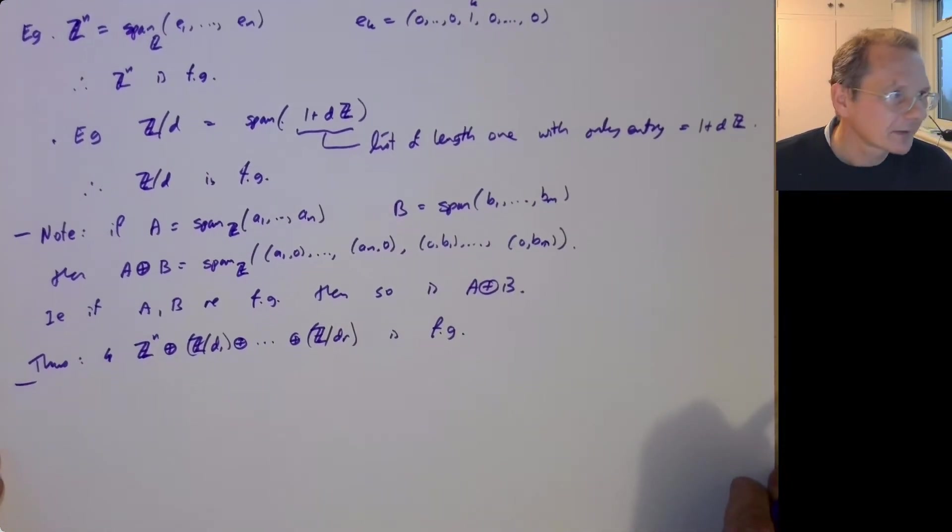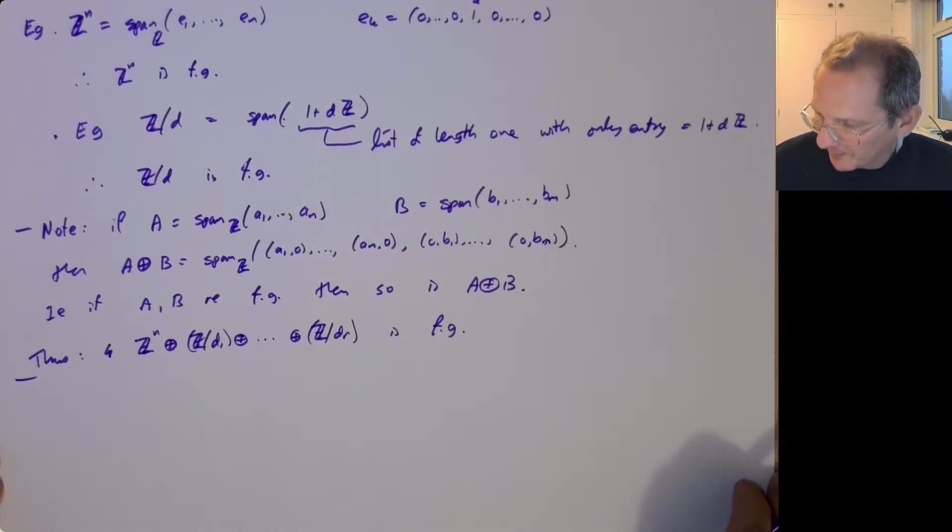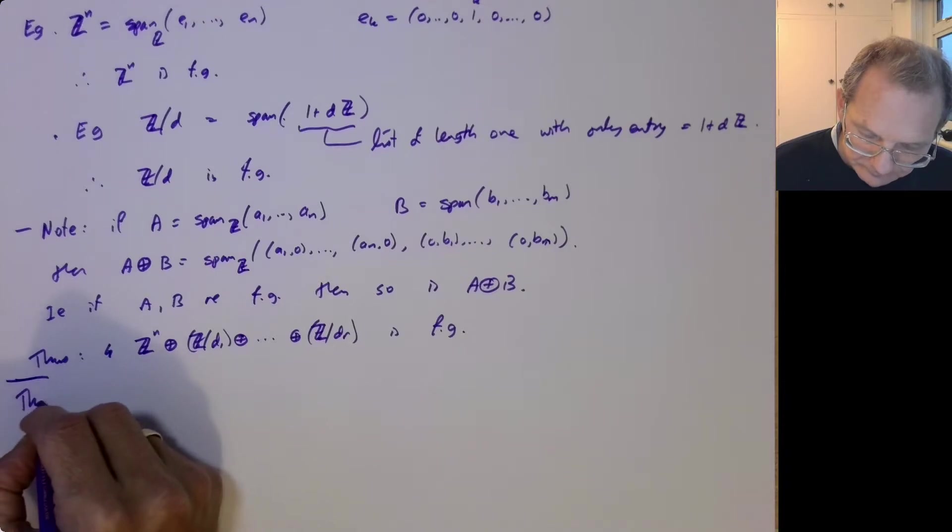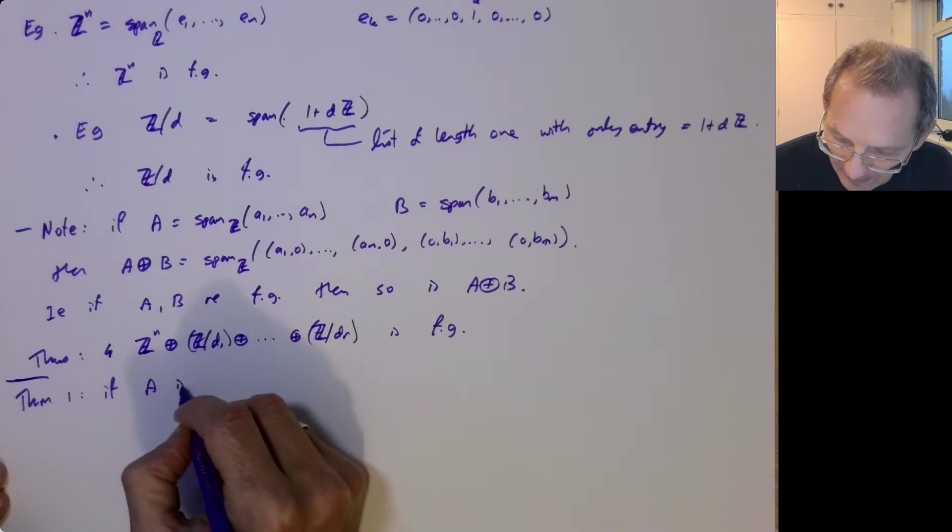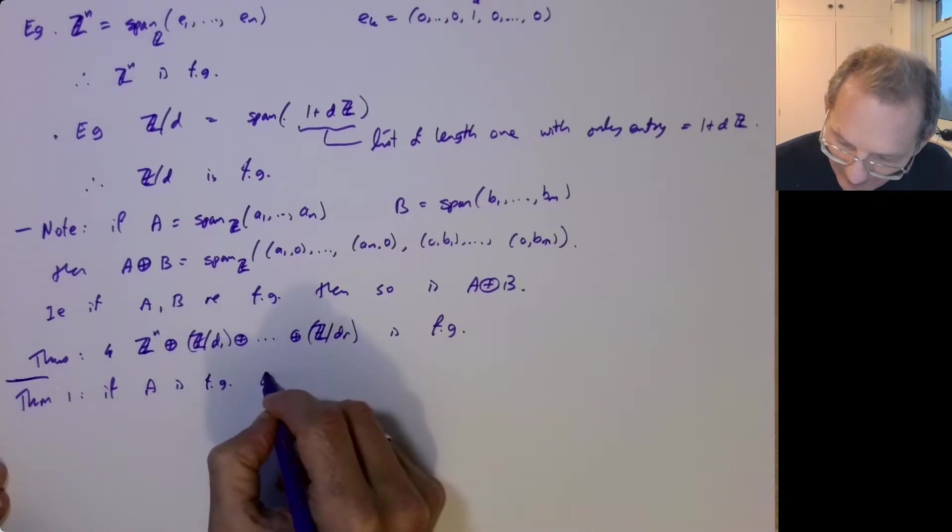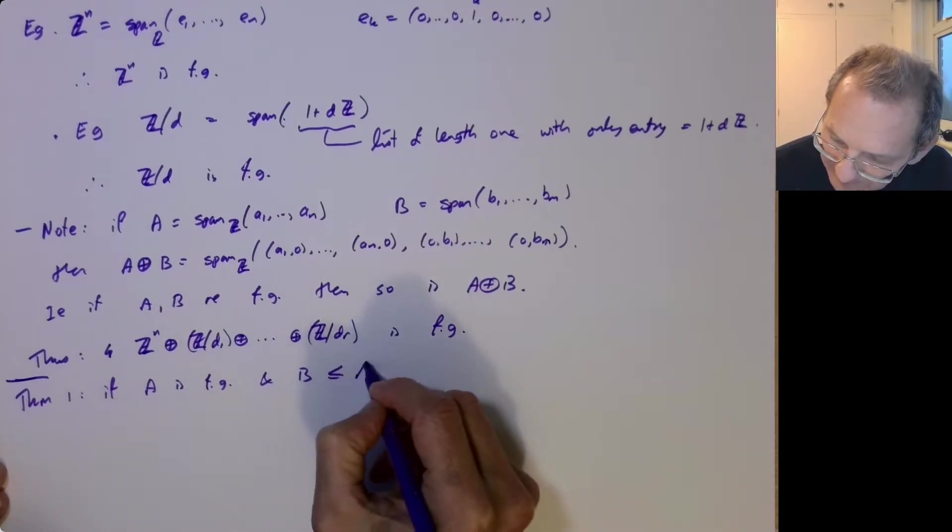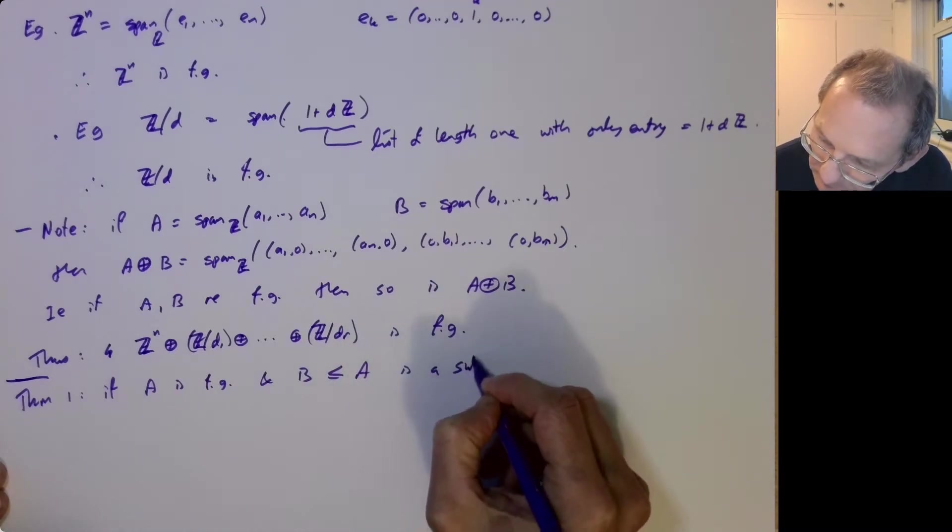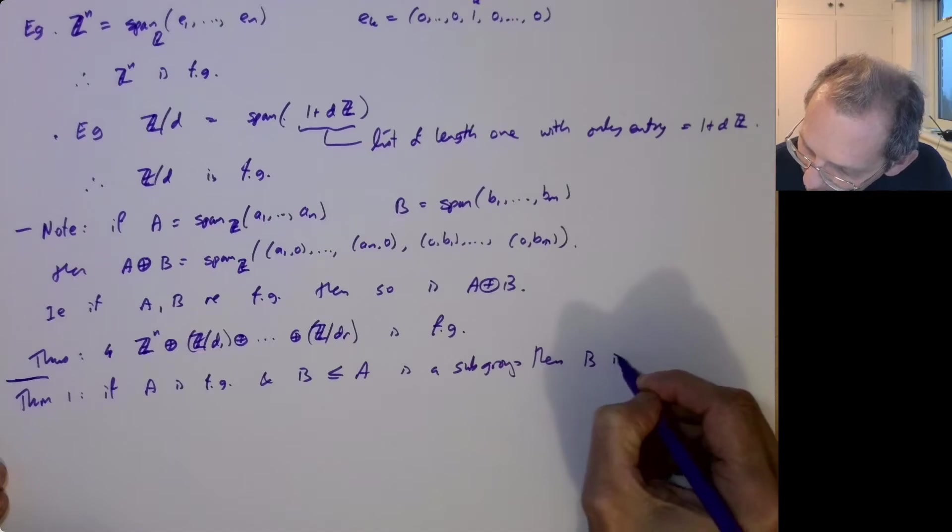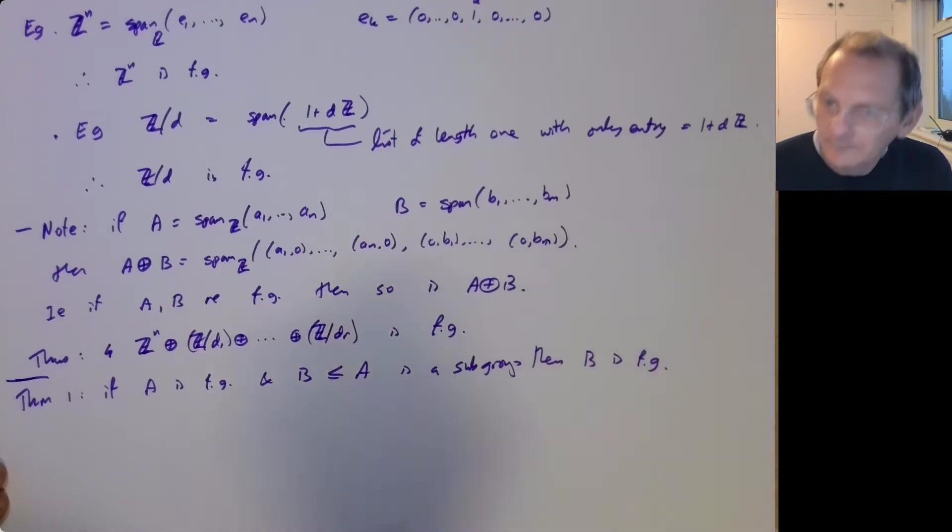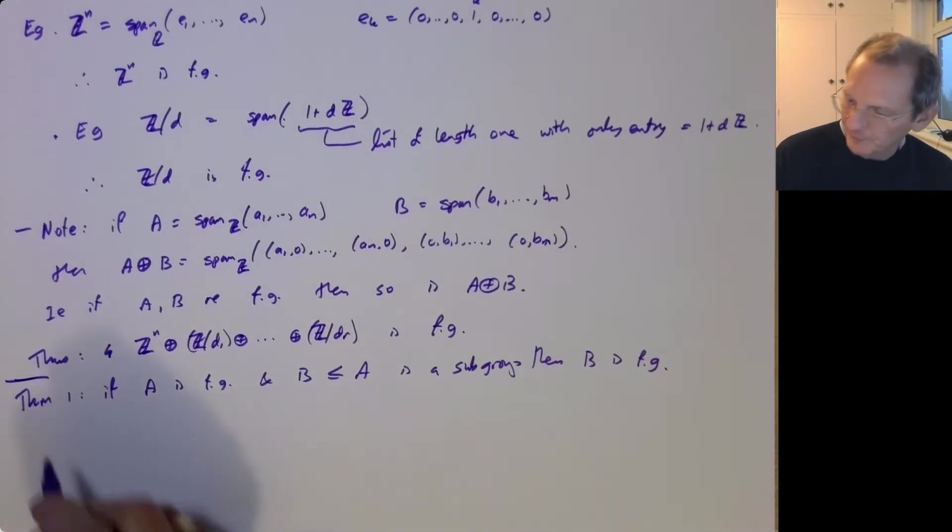And so there's a couple of theorems that I'm not going to prove in this course, but kind of standard theorems from abstract algebra and I'll just record for the time being. So firstly, if A is finitely generated and B is a subgroup of A, then B is finitely generated. Subgroups of finitely generated groups are finitely generated.